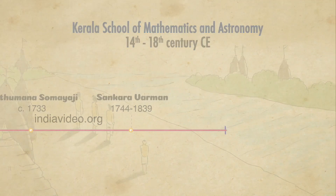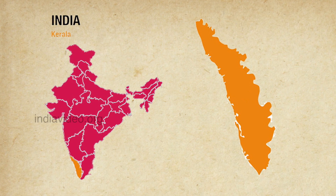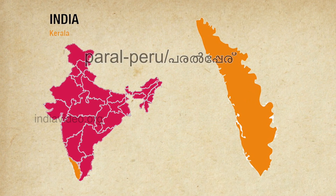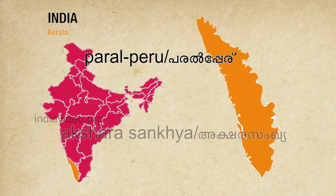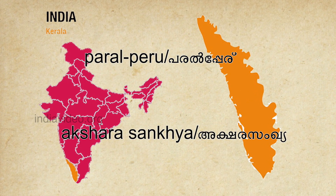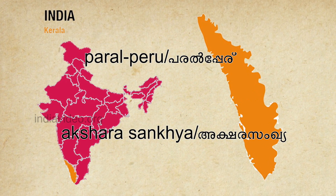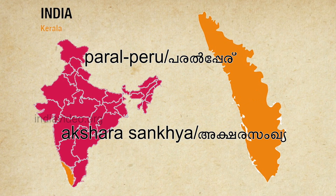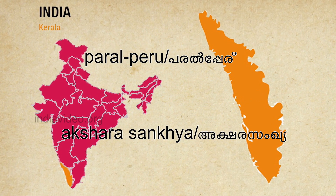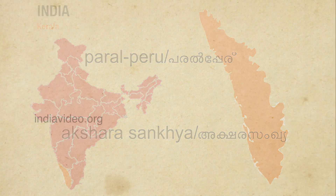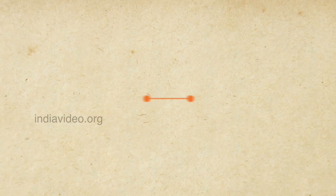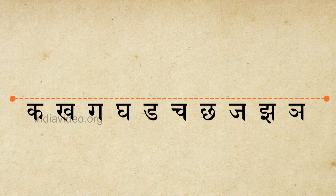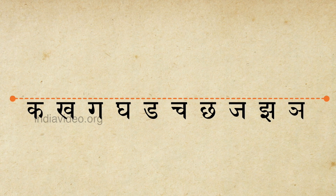In Malayalam, the regional language of Kerala, the Kattapayadi system is colloquially known by the name Paralpera or Akshara Samkhya. Kattapayadi uses Sanskrit consonants to represent numbers of the decimal system.